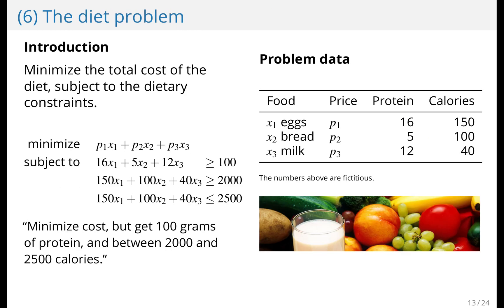The diet problem. We'd like to minimize the cost of food, but subject to some dietary constraints. So we would like to choose a quantity of eggs, bread, and milk to buy so that we minimize the price, but we still get for instance 100 grams of protein and between 2000 and 2500 calories. This is a problem that the American army worked on, and I think it was maybe in the 50s or something like this.